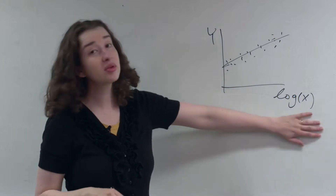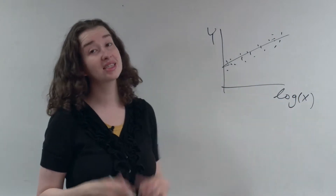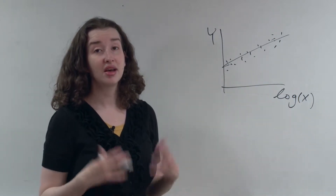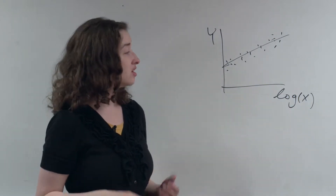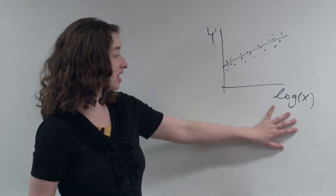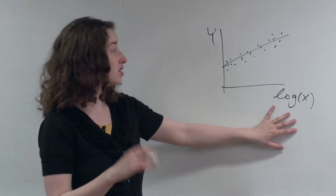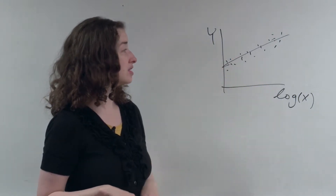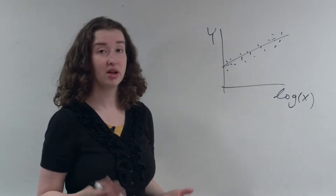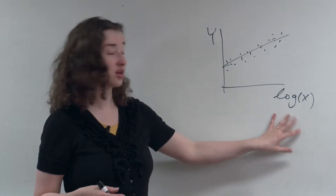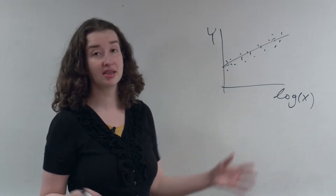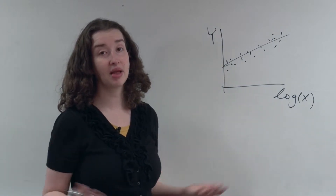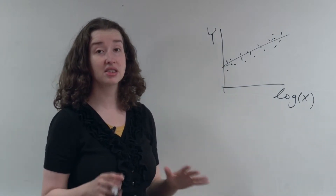If you're comfortable interpreting x on the log scale, you can just stop, and that is fine. You can say, when the log of x increases by 1, the mean of y increases by beta 1. If you're comfortable talking about the log of x — log dollars, log time, log distance — that is fine.